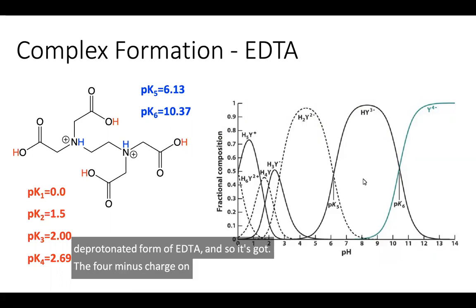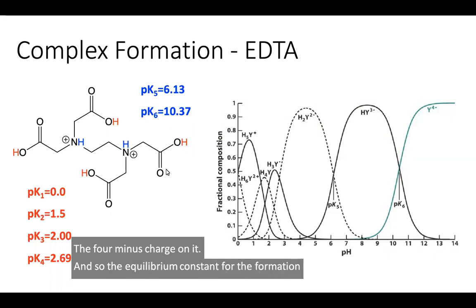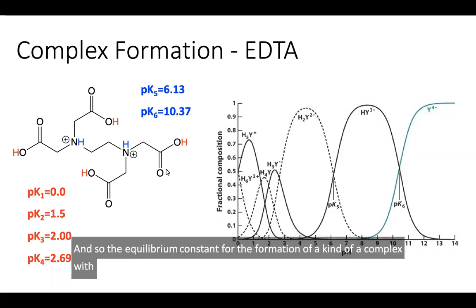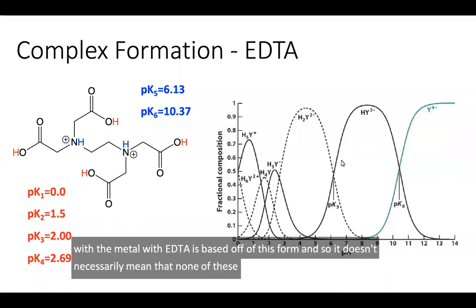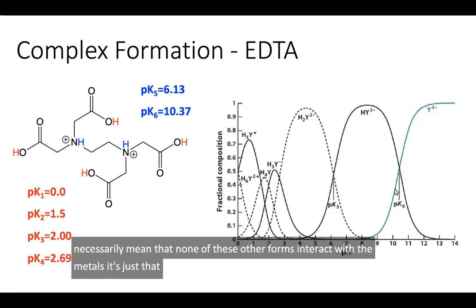The equilibrium constant for the formation of a complex with the metal with EDTA is based off of this form. It doesn't necessarily mean that none of these other forms interact with the metal. It's just that the equilibrium constant is specifically focused on this form.